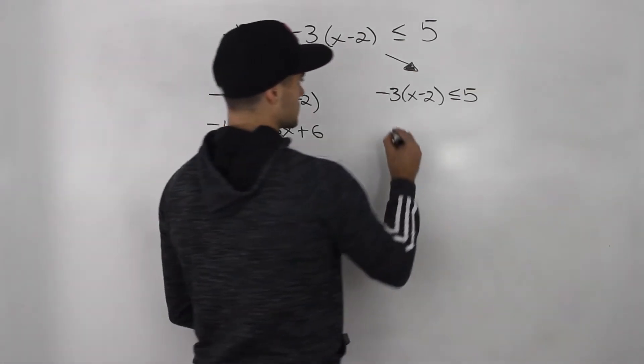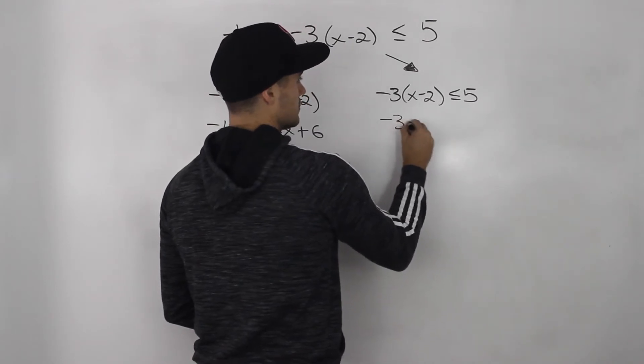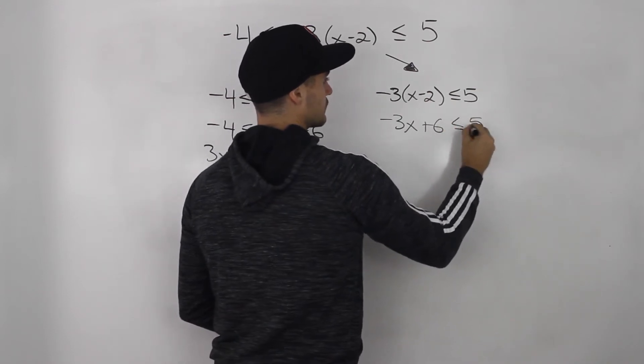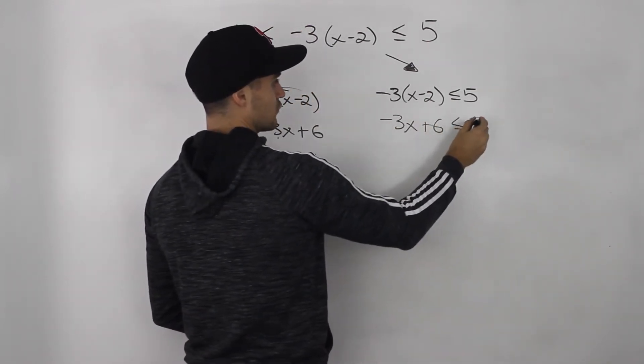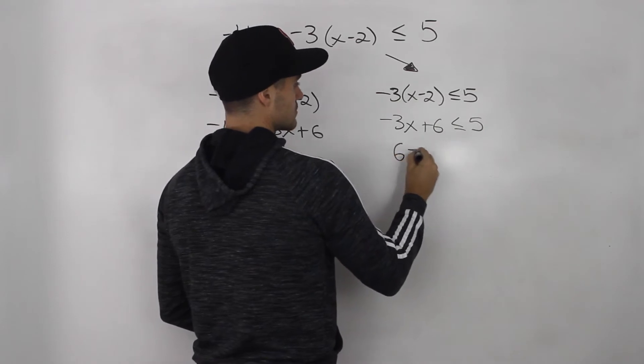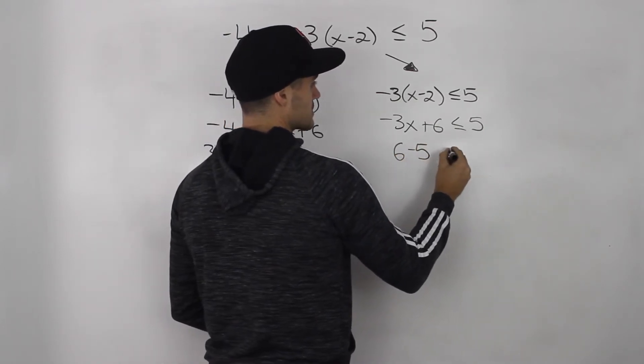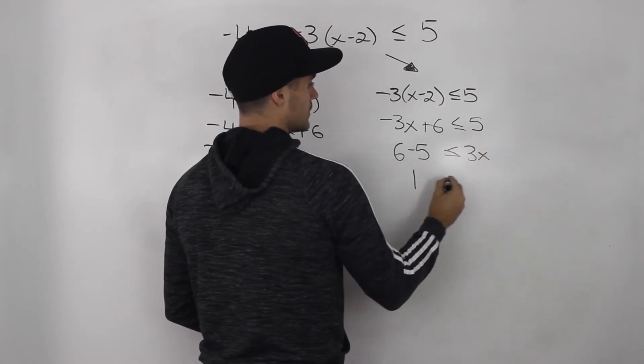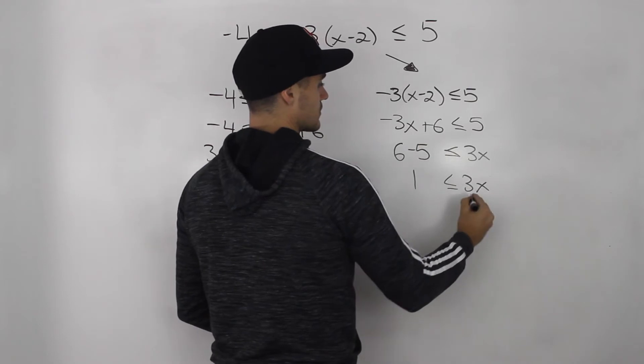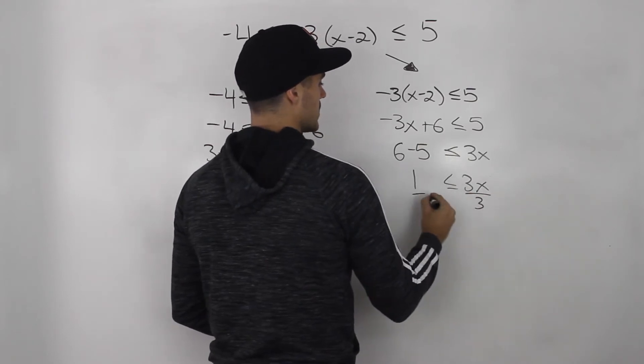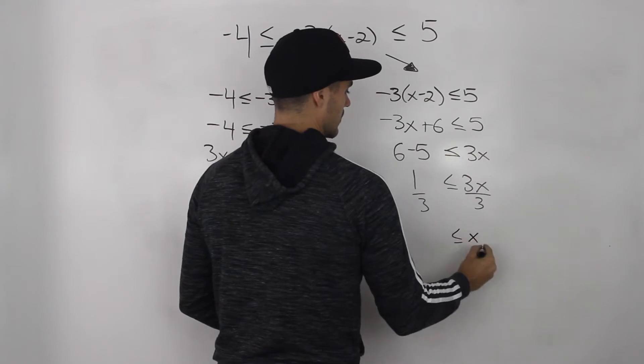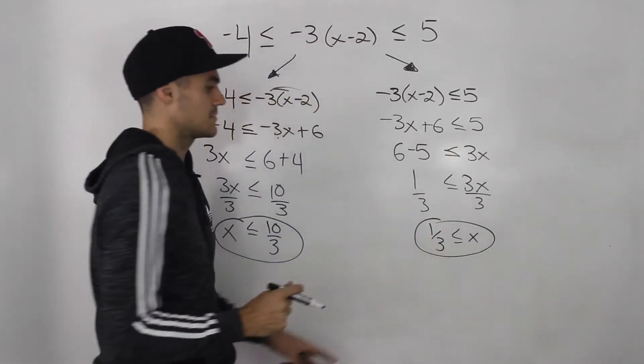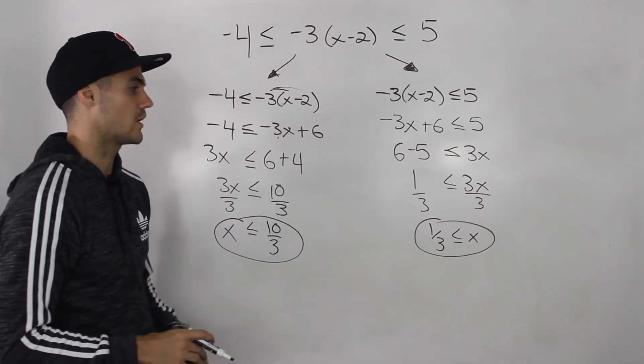Okay, so now let's solve this one. So negative 3 less than or equal to 5. Let's bring this negative 3x over, bring this positive 5 over. So 6 minus 5 less than or equal to positive 3x. 1 less than or equal to 3x. Divide both sides by 3.